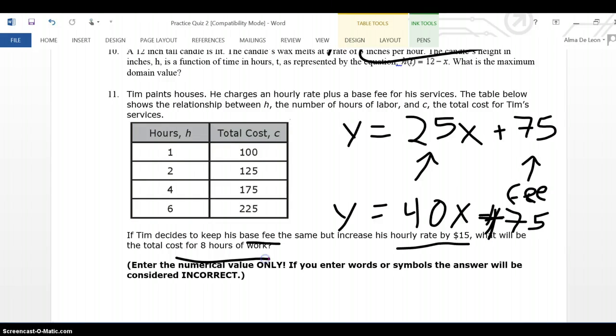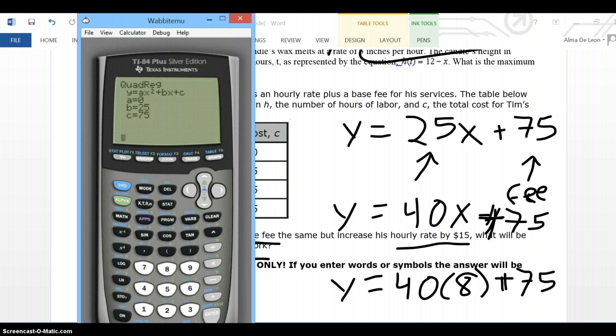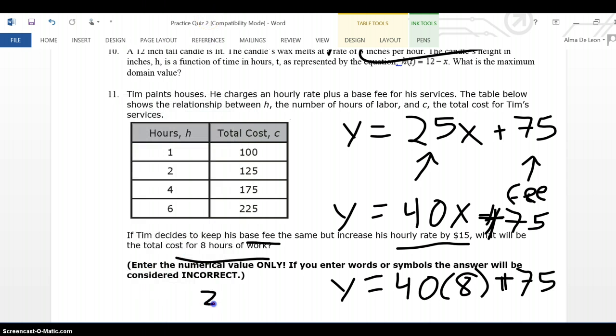And I'm trying to find the total cost for 8 hours. So if I put in 8 for x, if I put that in my calculator, 40 times 8 plus 75. I end up with 395. So the answer is 395 dollars.